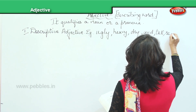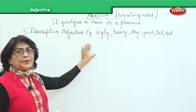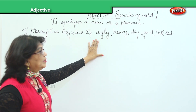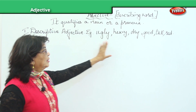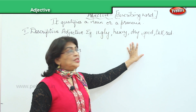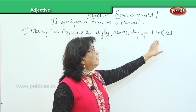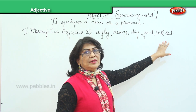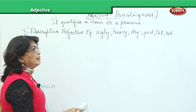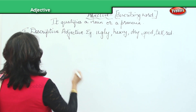Even colors like red are descriptive adjectives. They always describe — for example: 'He is an ugly man,' 'It is a very heavy box,' 'The weather is very dry,' 'She is a good girl,' 'They are very tall,' 'The house is painted in red.' All these adjectives describe a noun or a pronoun.